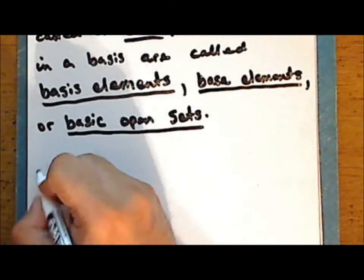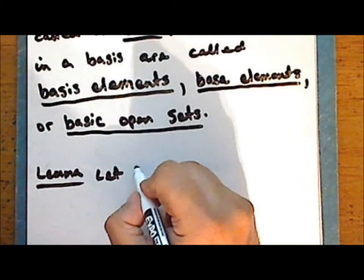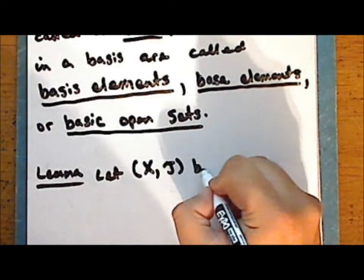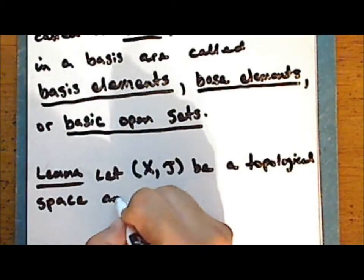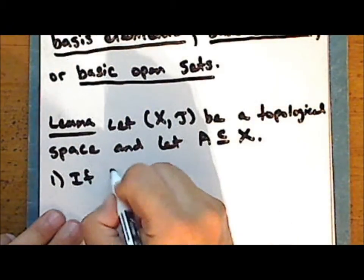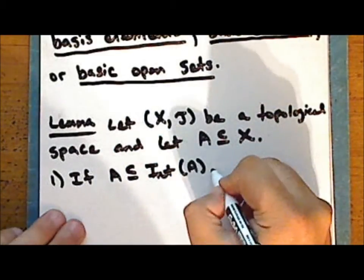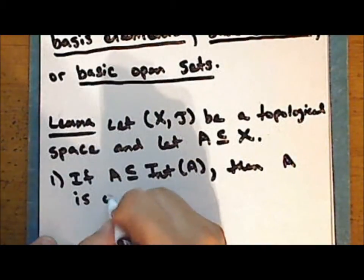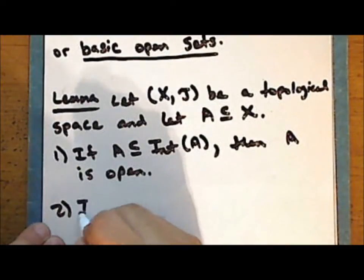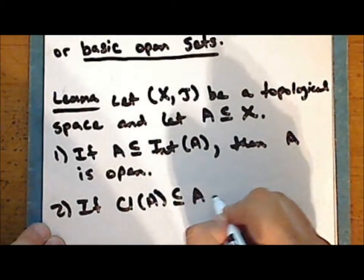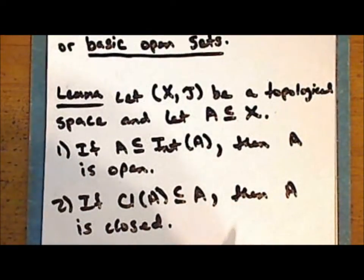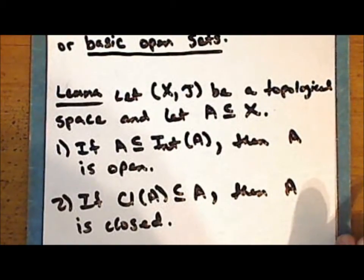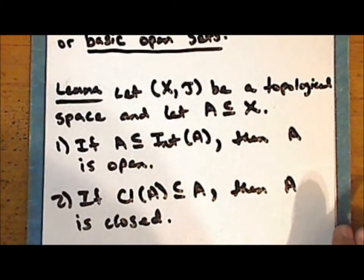Next we'll prove a lemma. Let X together with topology tau be a topological space and let A be a subset of X. If the set A is contained in its interior, then A is open. If the closure of A is contained in A, then A is closed. Notice these are weaker statements than the biconditionals: A is open if and only if it equals its interior, and A is closed if and only if it equals its closure.